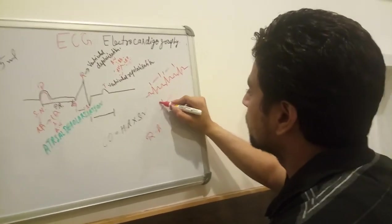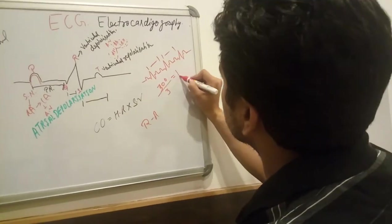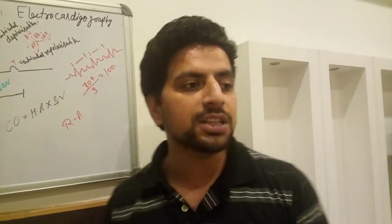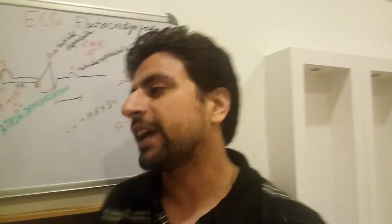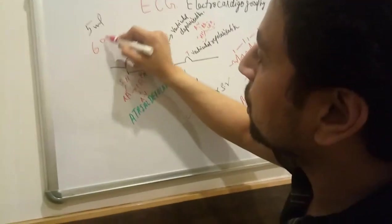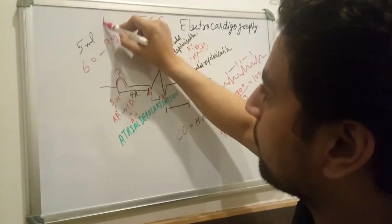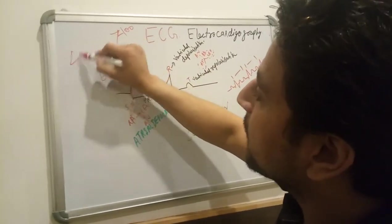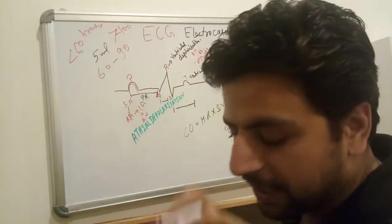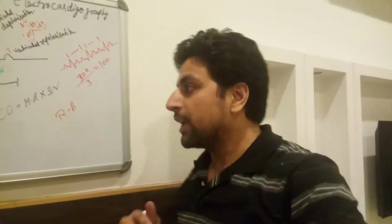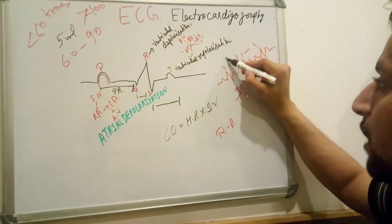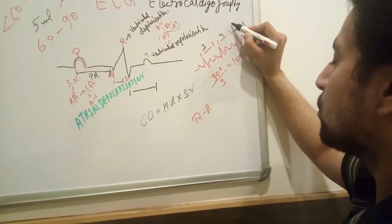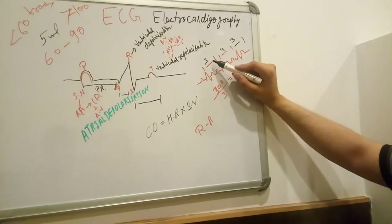We divide 300 by the number of large boxes in the R-R interval to find the heart rate. For example, if there are 3 large boxes, 300 divided by 3 gives a heart rate of 100. A heart rate of 100 is called tachycardia. Normal heart rate is 60 to 90 beats per minute. Above 100 is tachycardia; less than 60 is bradycardia.